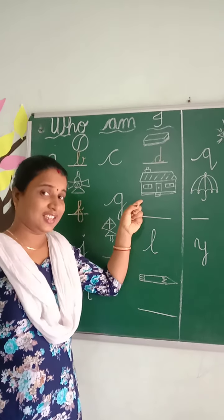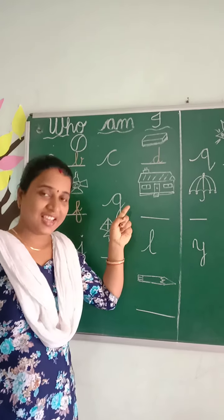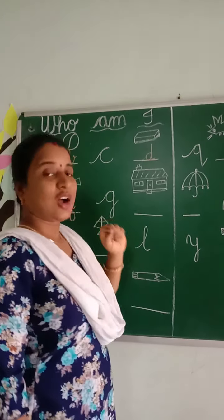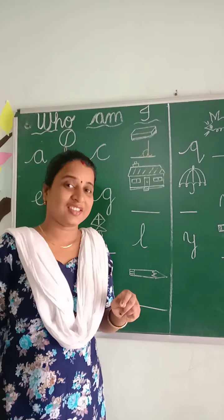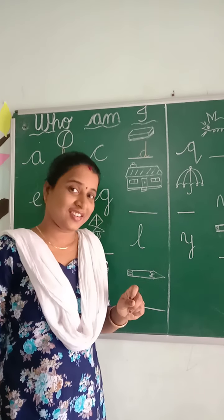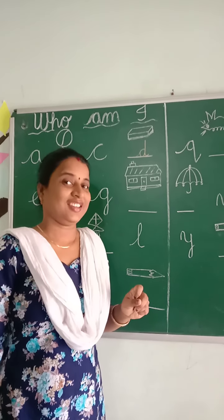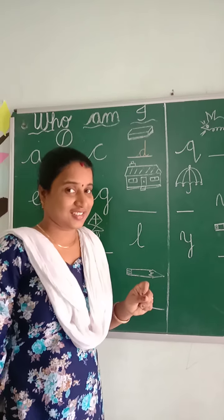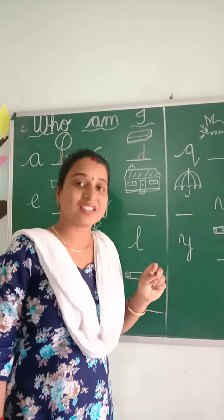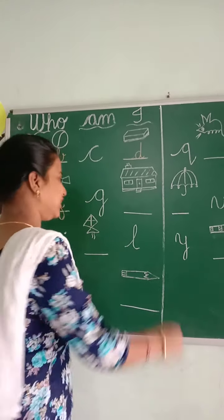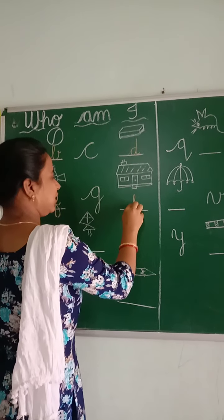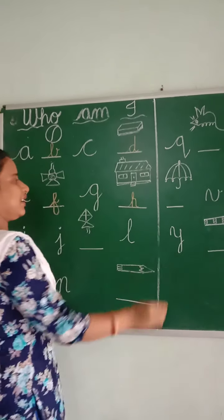F for fan. Then F is followed by G. Which picture is this? It is a house. House starts from which letter? H — the first letter is H. Small cursive H.